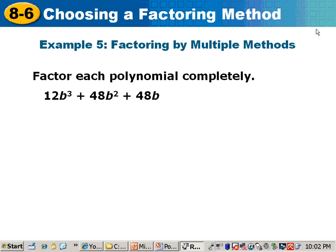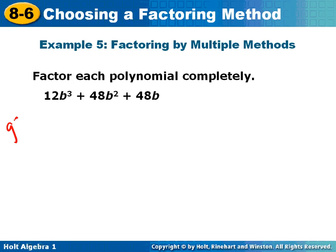Number 5. We're going to factor by many methods. First thing I'm going to do is GCF. These all have a 12 in common. They also all have at least one b in common. Taking out a 12b, that leaves me with b squared. 12 times 4 is 48. I need one more b. And 12 times 4 is 48. I already took that b out front.